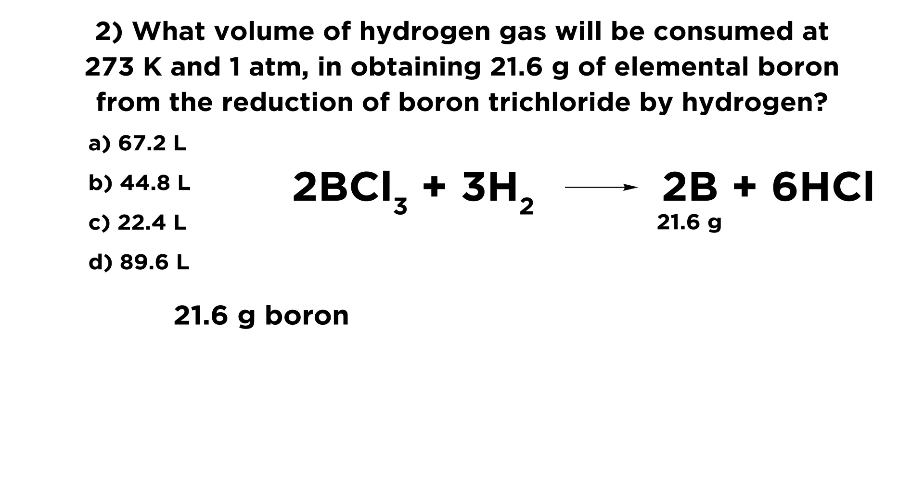21.6 grams of boron times 1 mole over 10.8 grams, that is the molar mass of boron, gives us 2 moles of boron. So we're trying to get 2 moles of boron, and we want to know how many moles of hydrogen gas are going to be needed in order to get that many moles of boron. And what we find out is because of this 3 to 2 ratio here in the balanced chemical equation, we need 3 halves as many moles of hydrogen as the moles of boron we're trying to get.